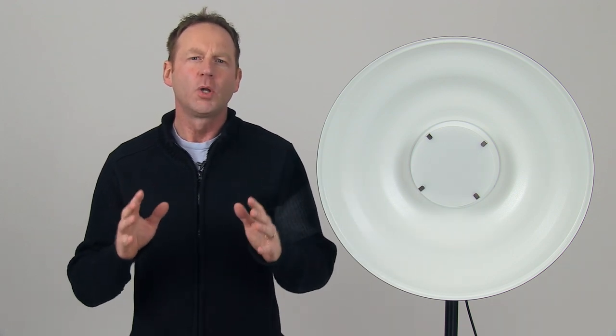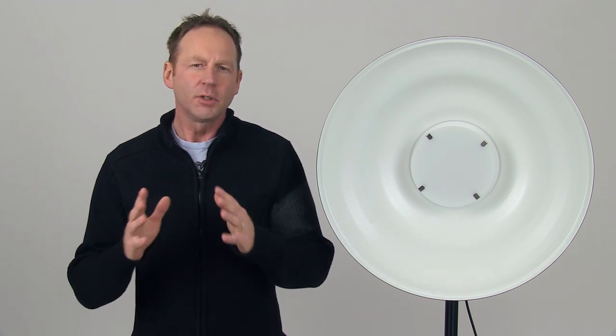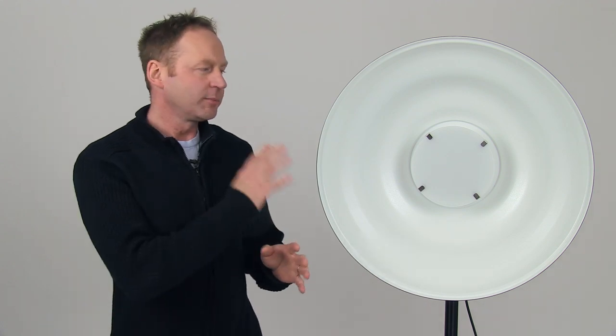Alright, so we're going to cover a simple one light portrait setup using the Mola Demi Beauty Dish as our main light modifier. We'll be using an Einstein E640 as our strobe, my camera is the Canon 5D Mark III, and we'll use a couple of different lenses. Let's go over some of the details.